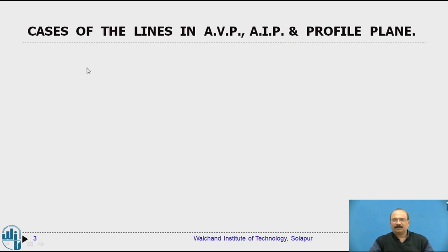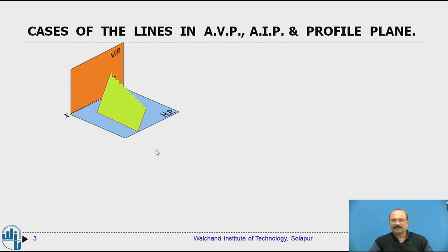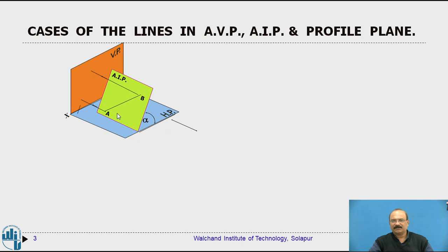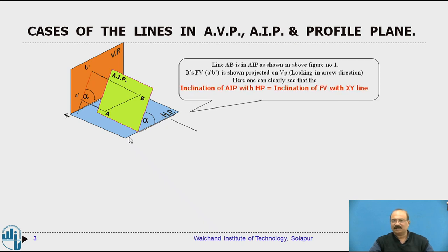Now we are going to have a bit of previous review. The cases of lines in auxiliary vertical plane and auxiliary inclined plane, then we can go for the profile plane. This is an auxiliary inclined plane, making a certain degrees of angle — we give the notation as alpha — the angle it makes with the horizontal reference plane. The line is situated in the auxiliary inclined plane, so we are going to get the front view as A dash, B dash. This angle alpha is what the line makes with the horizontal reference plane. This is the case we have studied in previous detail.